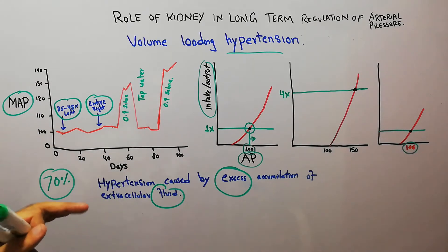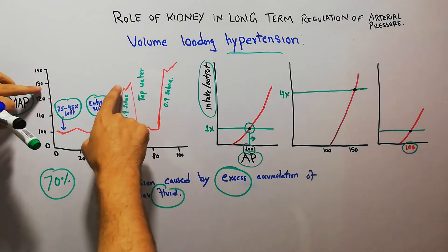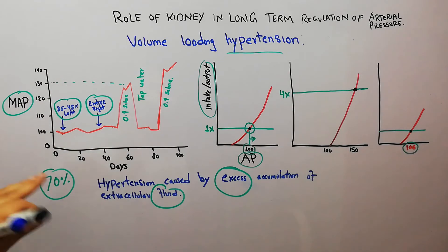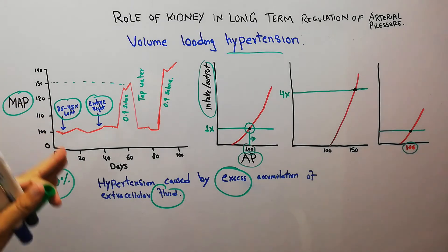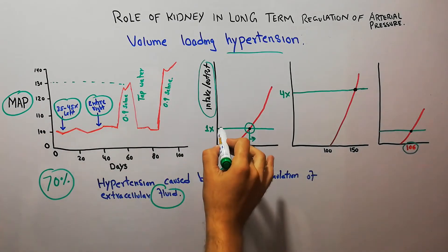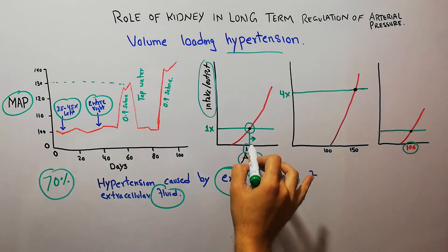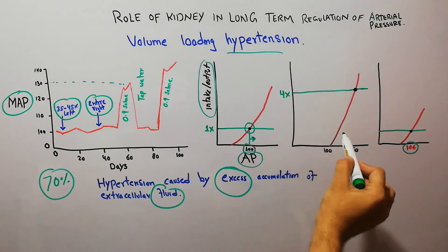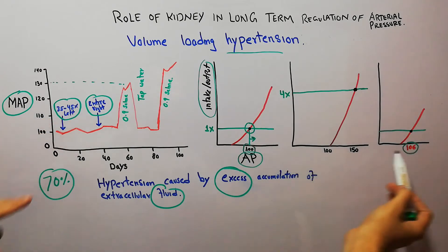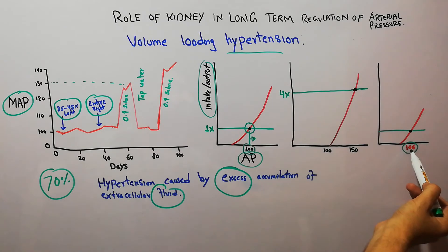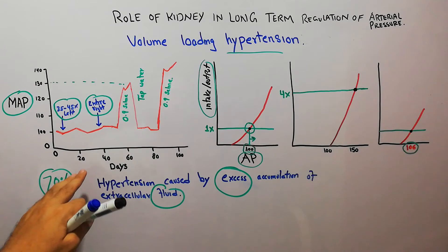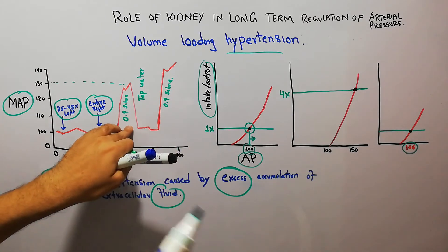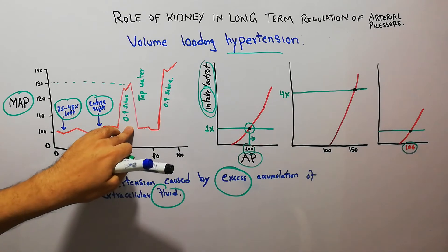This accumulation of excess fluid leads to an increase in arterial pressure, from the 106 mmHg level up to 130 or 140 mmHg. It shows that if the intake of salt and water is increased, the arterial pressure can increase above the normal level. The intake has increased significantly due to the saline water given to the dogs.